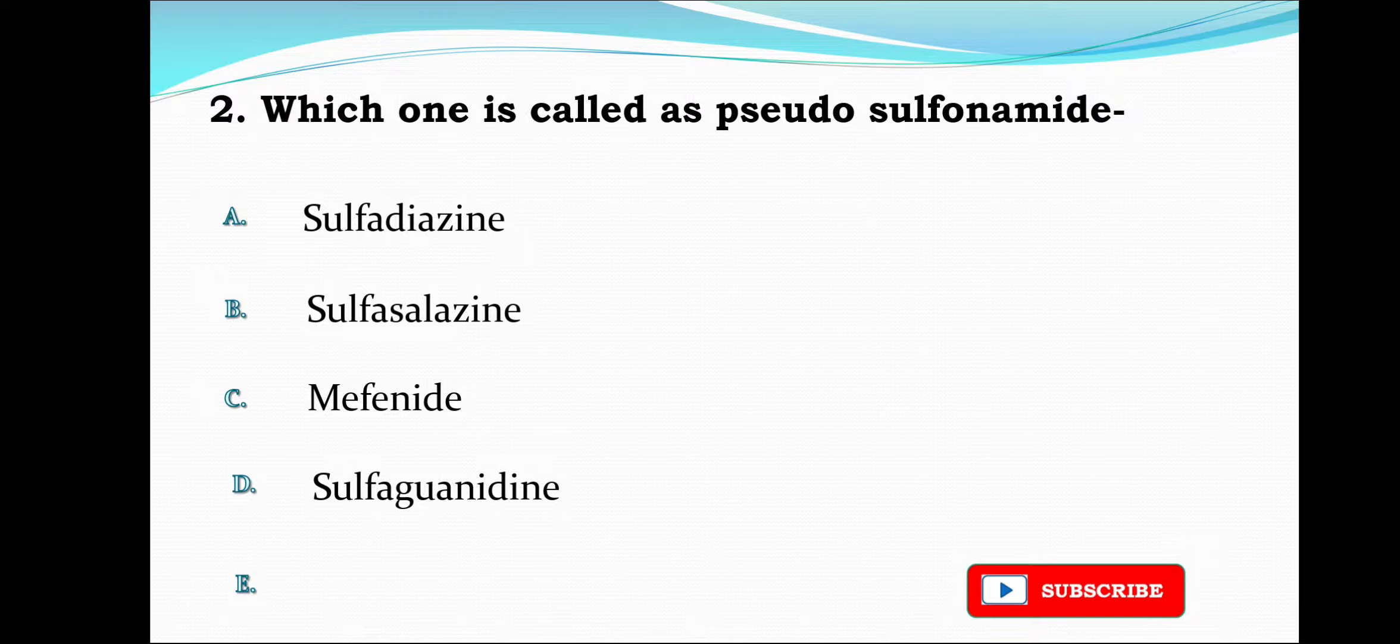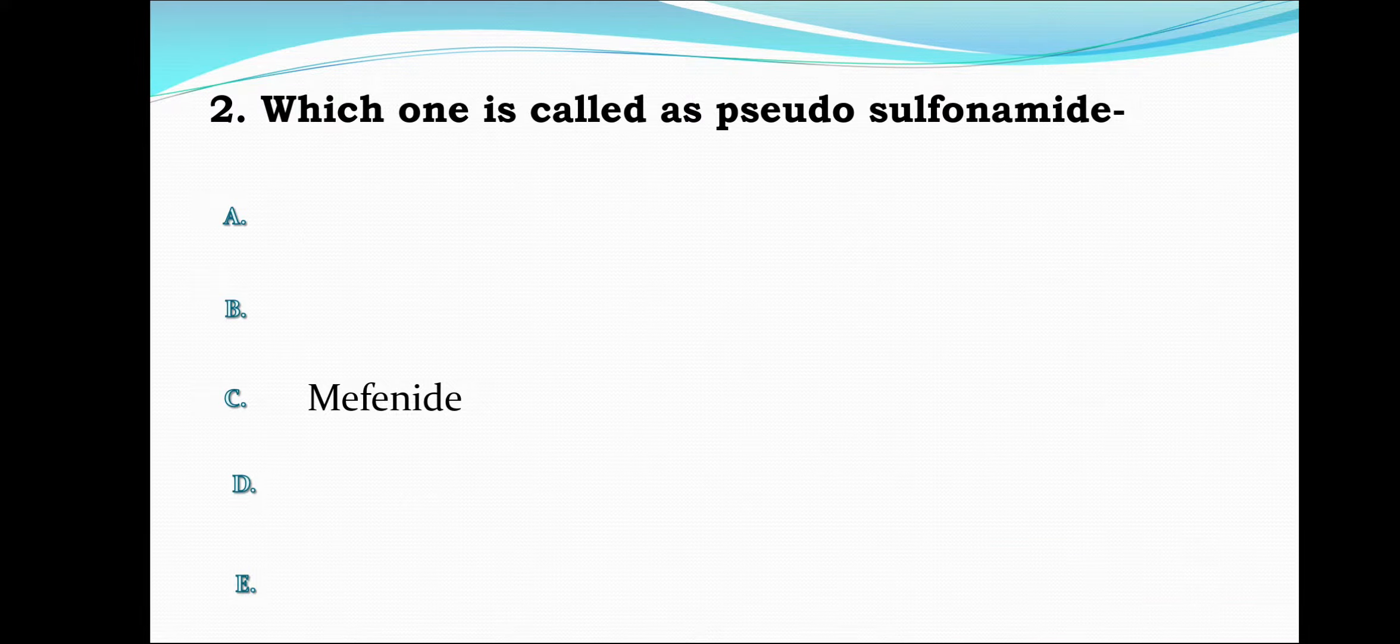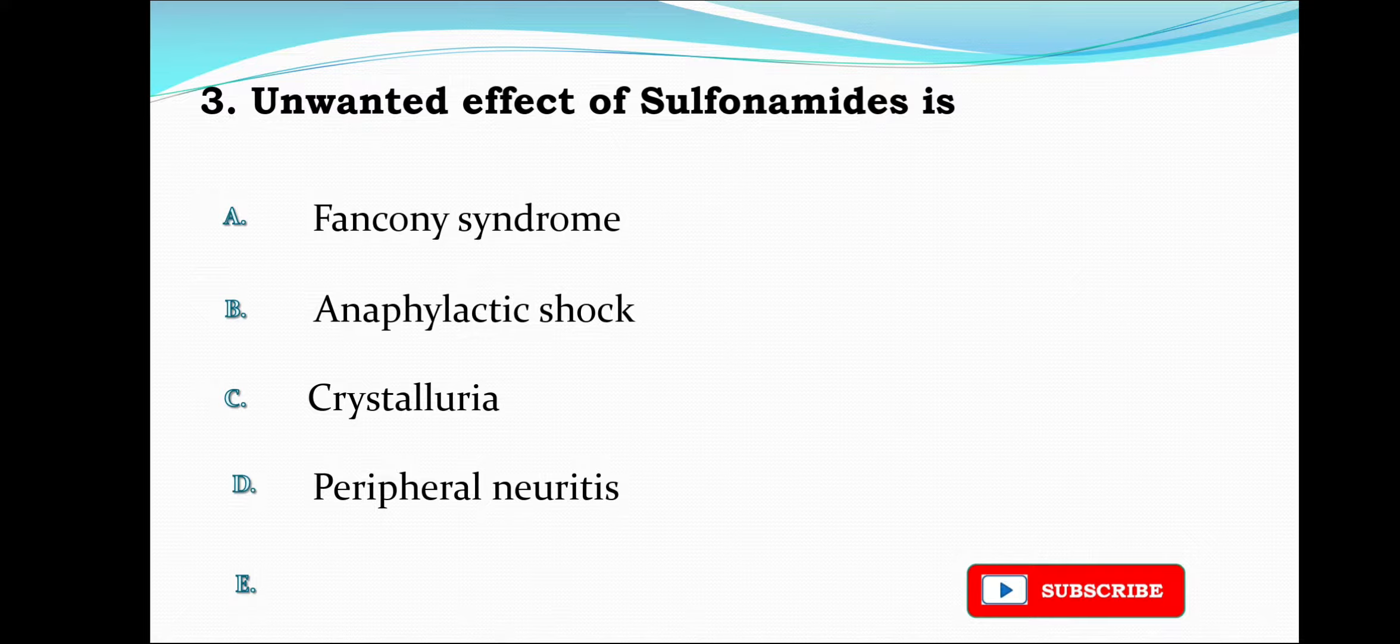Next question: The unwanted effect of sulfonamide is Fanconi syndrome, anaphylactic shock, crystalluria, or peripheral neuritis. The correct answer is crystalluria, that is option C.